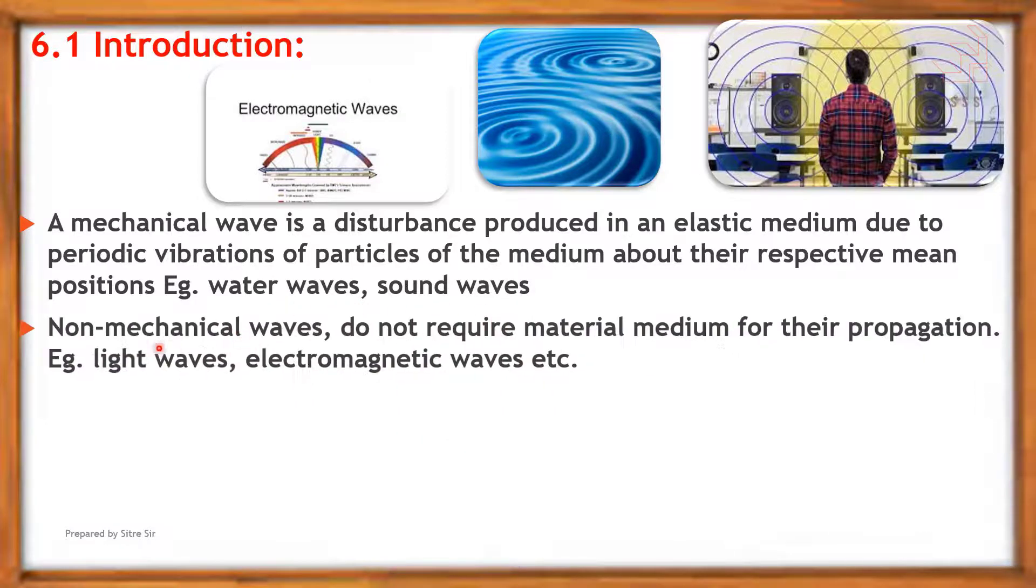The second type is non-mechanical wave. Non-mechanical waves do not require a material medium for their propagation. They can travel without a medium. For example, light waves, electromagnetic waves, etc.